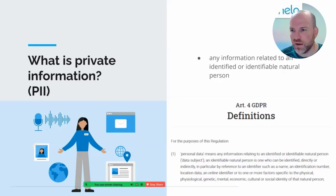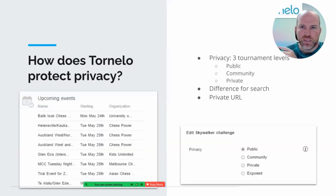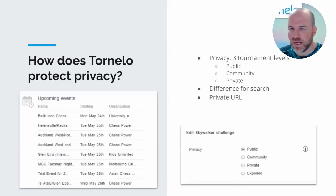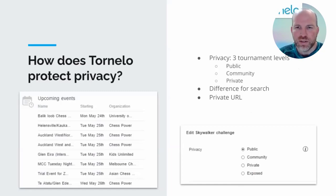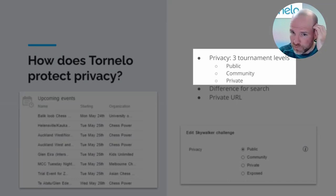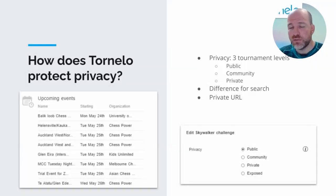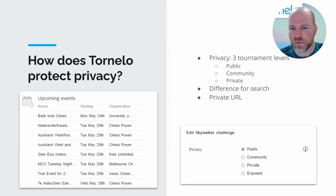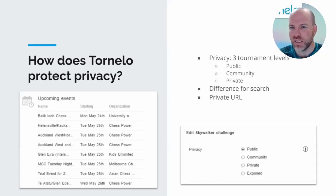We know what private information is — name, email address, phone number, date of birth — and we have obligations to look after that information. There are two different interacting privacy features on Tornello. The first is the privacy for a tournament, and a tournament has three different levels of privacy, which then interacts with the individual players who also have three different levels of privacy that they can choose.